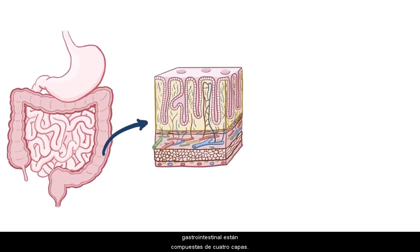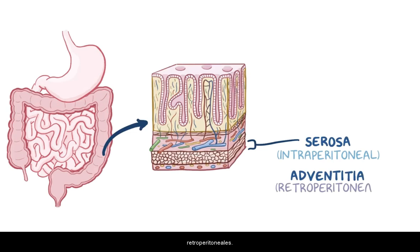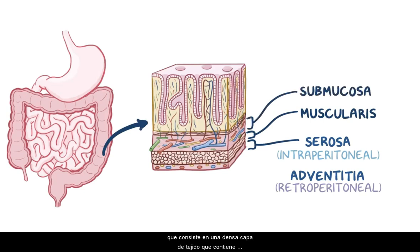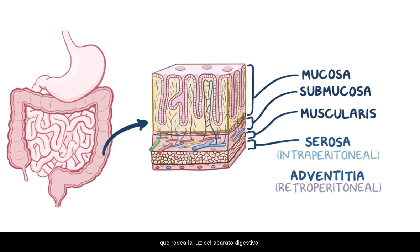The walls of the gastrointestinal tract are composed of four layers. The outermost layer is called the serosa for the intraperitoneal parts and the adventitia for the retroperitoneal parts. Next is the muscular layer, which contracts to move food through the bowel. After that is the submucosa, which consists of a dense layer of tissue that contains blood vessels, lymphatics, and nerves. And finally, there is the inner layer of the intestine, called the mucosa, which surrounds the lumen of the gastrointestinal tract and comes in direct contact with digested food.